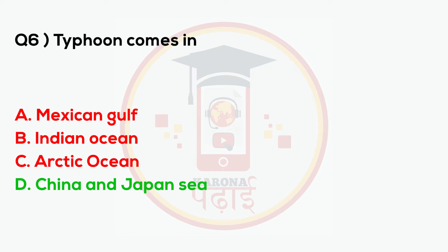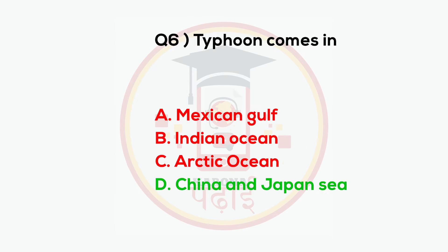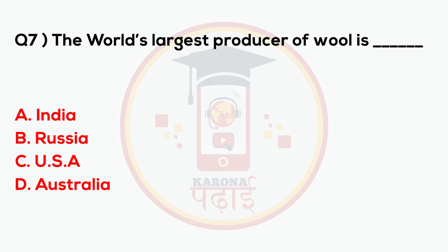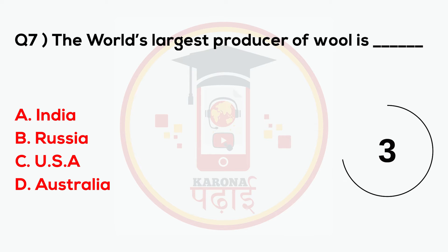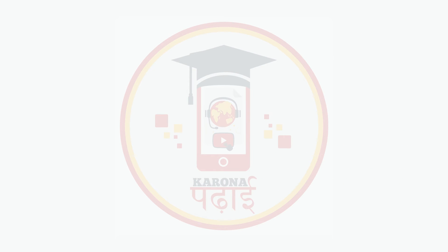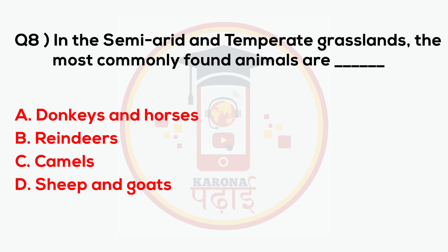Answer: China and Japan. The world's largest producer of wool is blank. In the semi-arid and temperate grasslands, the most commonly found animals are blank.